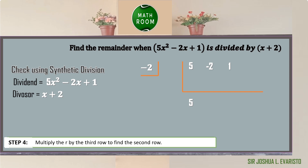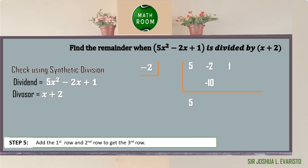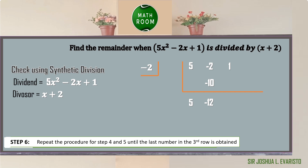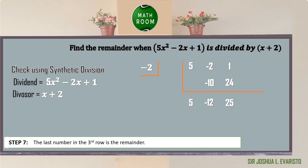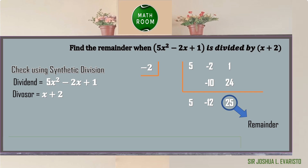Step 4: multiply r by the third row to find the second row. Negative 2 times 5 is equal to negative 10. Step 5: add the first and second row to get the third row. Negative 2 plus negative 10 is equal to negative 12. Step 6: repeat the procedure for steps 4 and 5 until the last number in the third row is obtained. Negative 2 times negative 12 is equal to positive 24. Then 1 plus 24 is equal to 25, which is our remainder. We can conclude using both the remainder theorem and synthetic division that our remainder is 25.